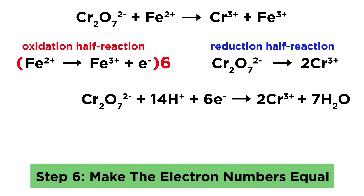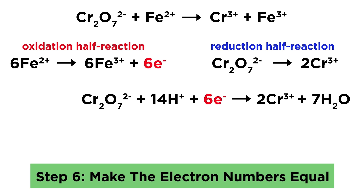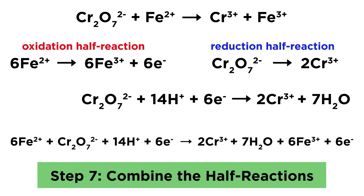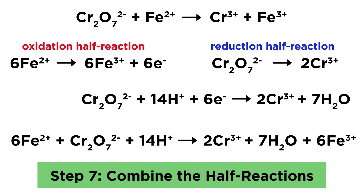That means we will have to multiply the oxidation half-reaction by 6 in order to get 6 electrons to match the other half-reaction, so 6 of each iron ion and the 6 electrons we need. Now we can finally combine these half-reactions. Once they are combined, we can cancel out any species that appear on both sides, which in this case is just the electrons. So we can now see the exact number of ions that must react in order to produce this particular redox reaction.